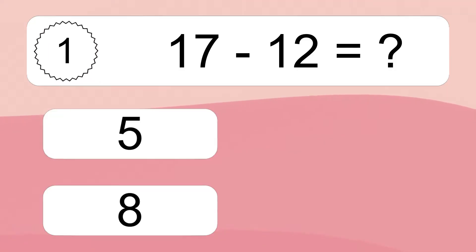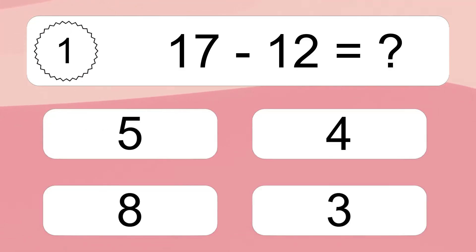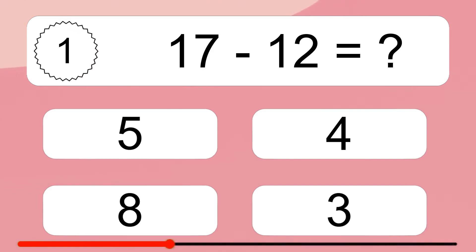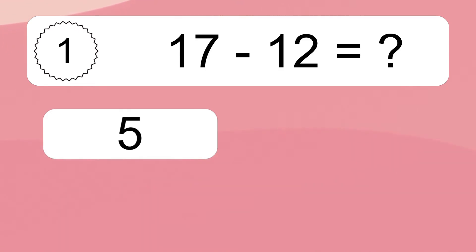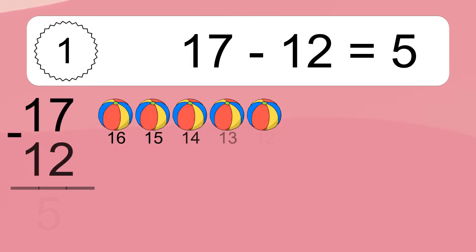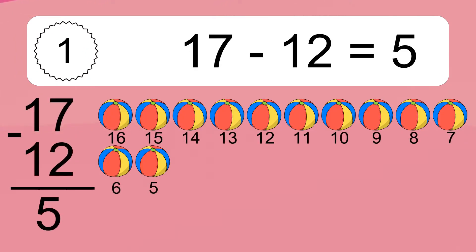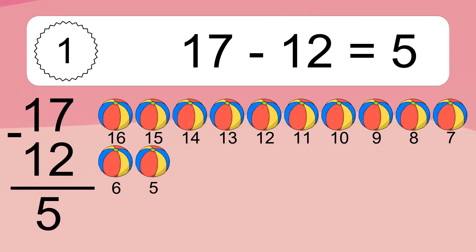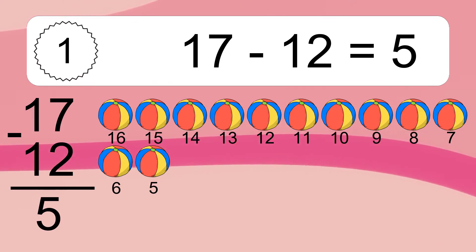17 minus 12 equals what? 17 minus 12 equals 5. Let's count it: 16, 15, 14, 13, 12, 11, 10, 9, 8, 7, 6, 5.